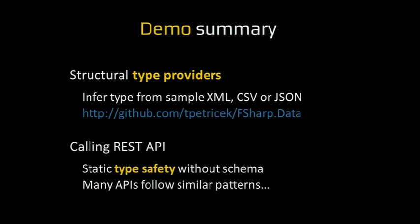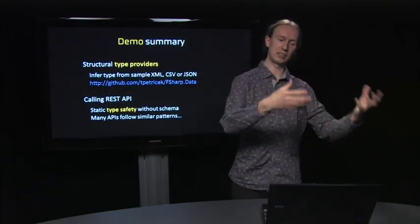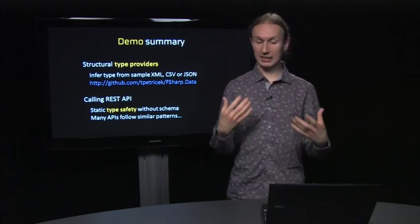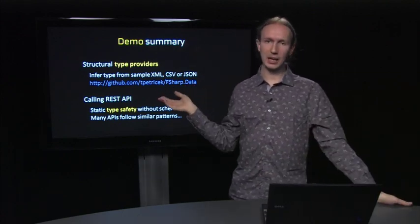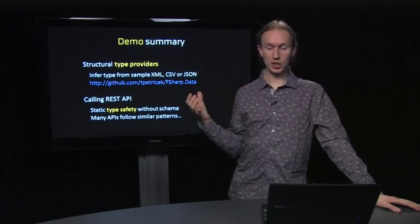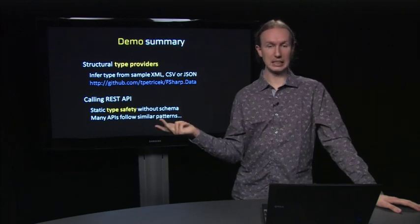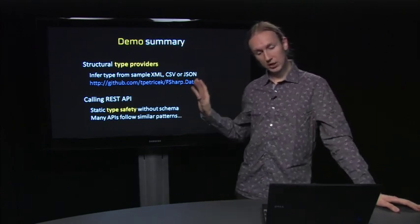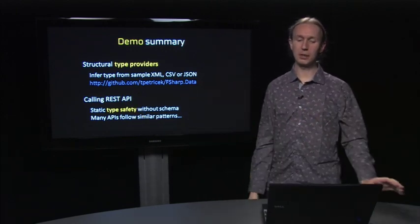In this example we used a different kind of type provider — it's not specific to a single API. It's a very general provider which can work with any JSON data, provided you give it some example and it infers the structure from that example. The F# data library has different type providers like this for accessing XML data, JSON, and CSV files. That's another very useful thing you can get from F# type providers.